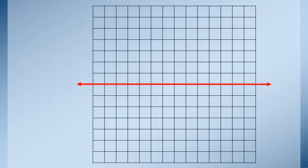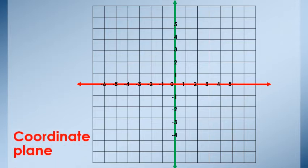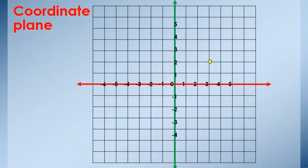Here, draw the coordinate plane: axis X is the horizontal axis, and axis Y is the vertical axis. Put the points on axis X and on axis Y. To find the coordinate of any point, first join it to axis X — equal 3 — and join it to axis Y — equal 2. Then the point is (3, 2).